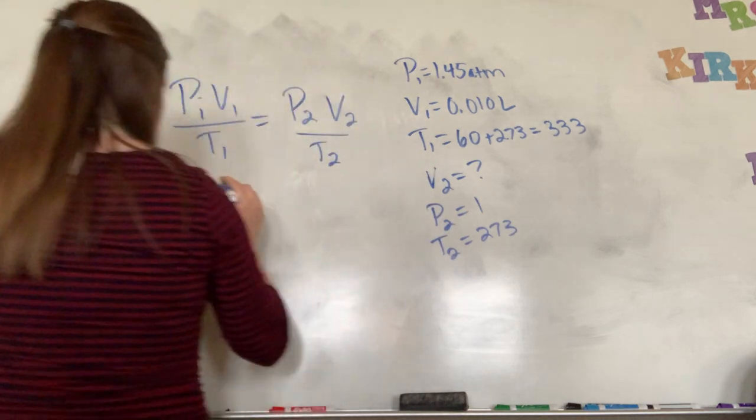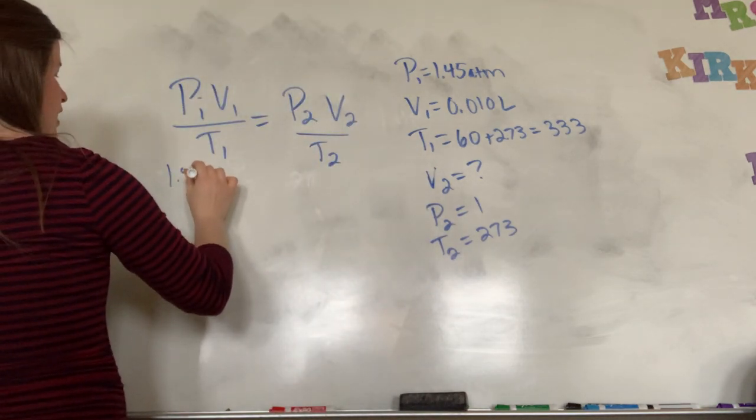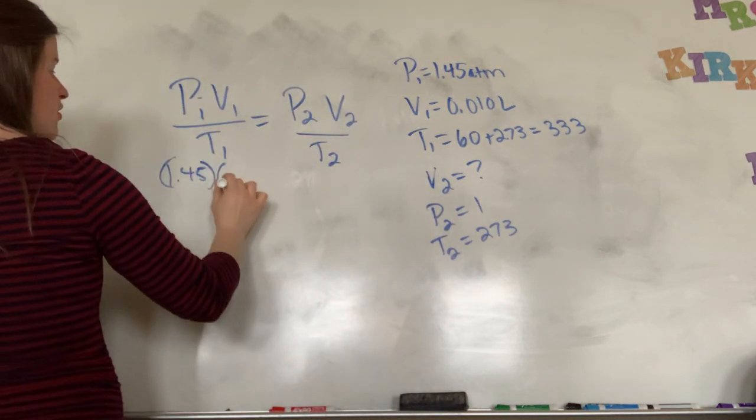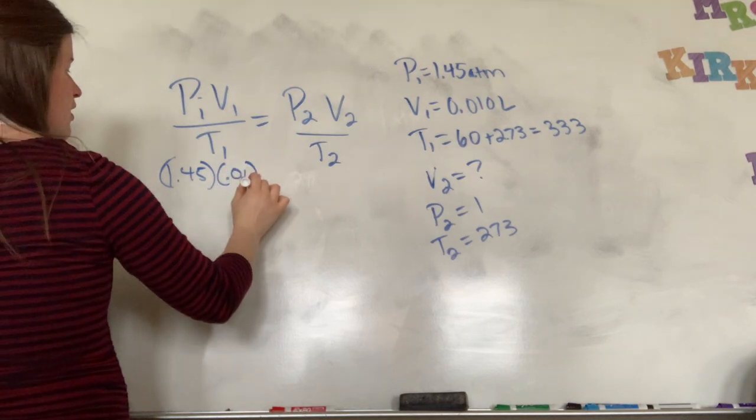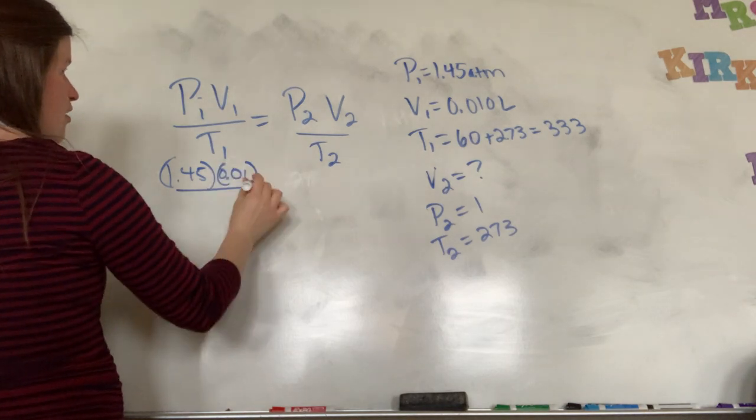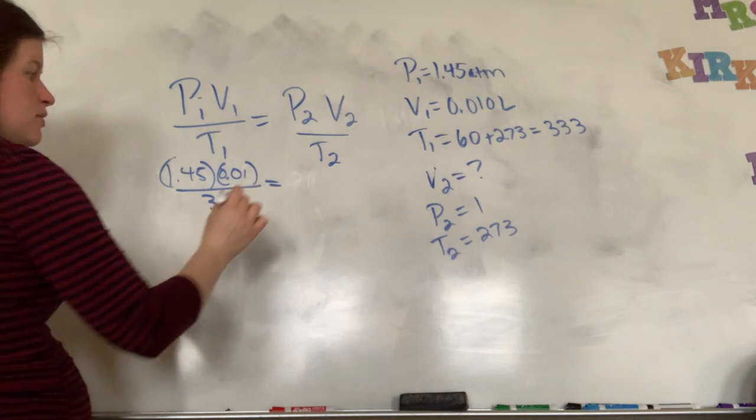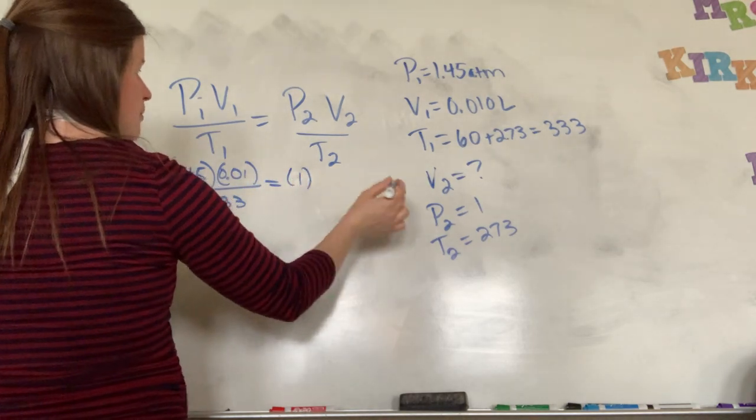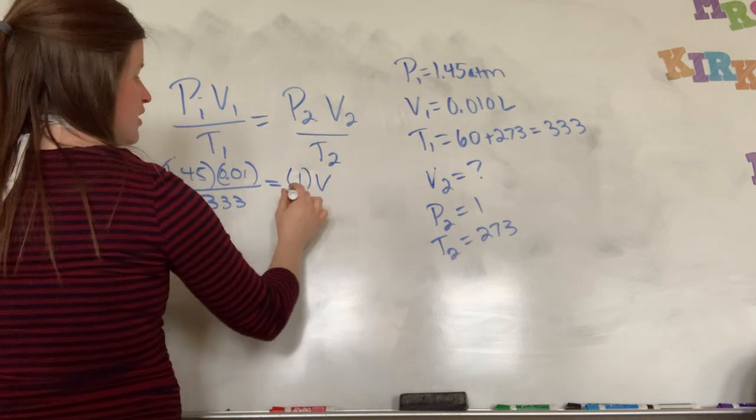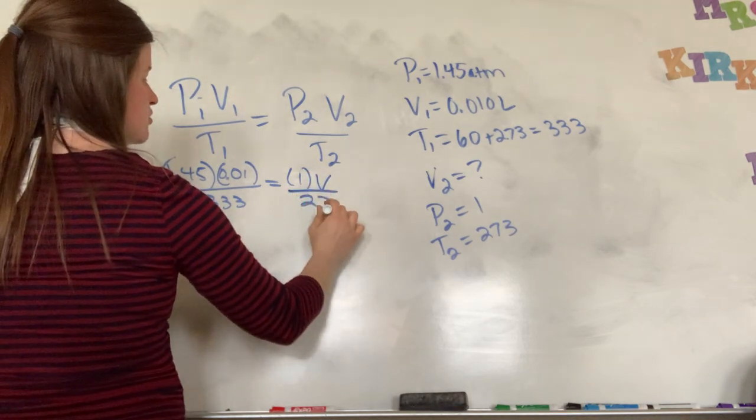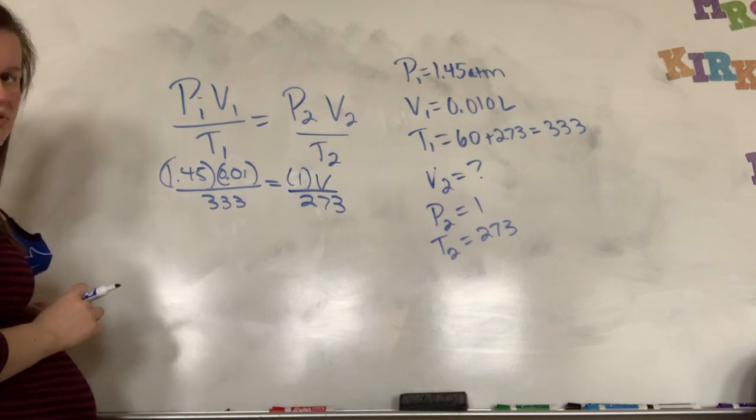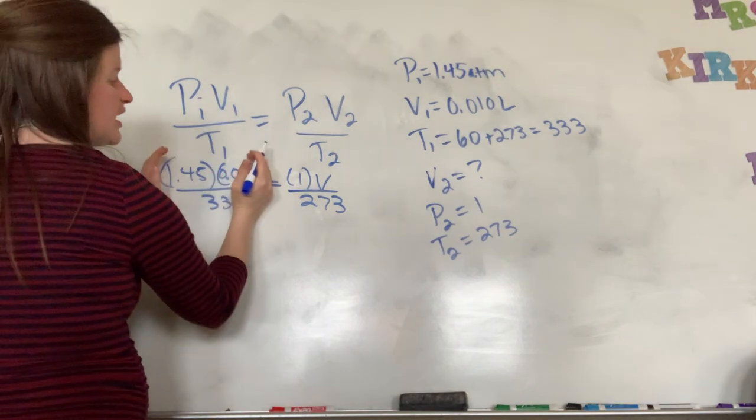So I'm going to start with my P1. I'm going to have 1.45 times my volume, so 0.01, all divided by 333 for my temperature. And then my P2 is 1 atmosphere. My V is what I'm solving, and then my temperature is 273, because that's standard temperature and pressure. So this side, you can completely calculate.